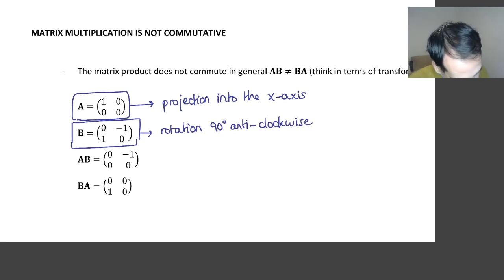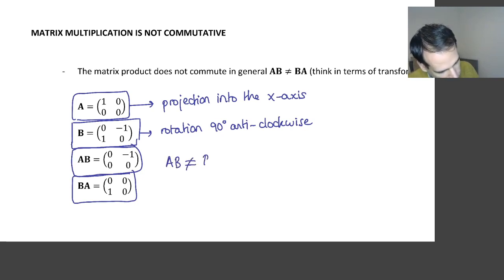Now we do the multiplication A times B, and we get this matrix here. But if we do the multiplication B times A, we get this matrix here, which is different. So A times B is different to B times A.